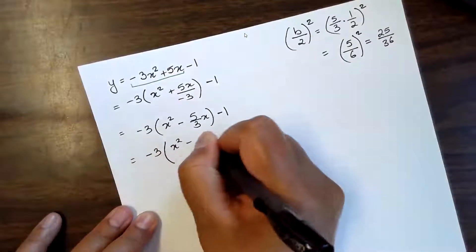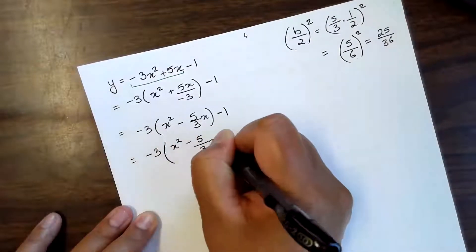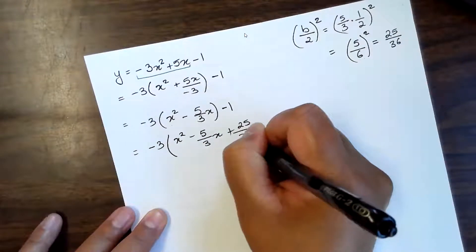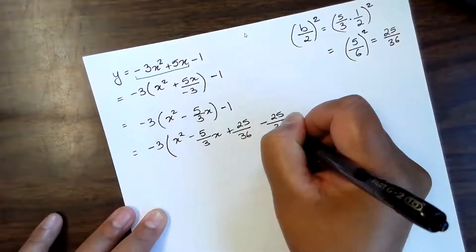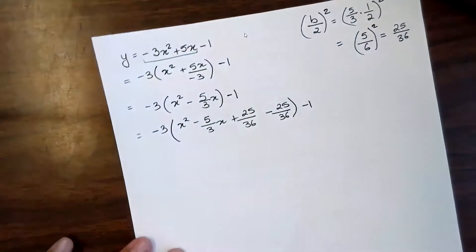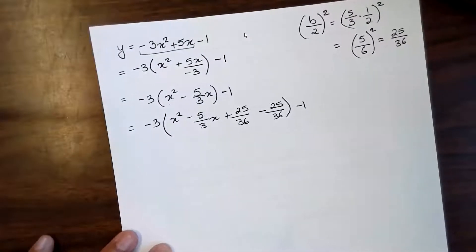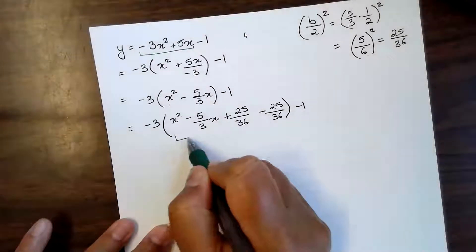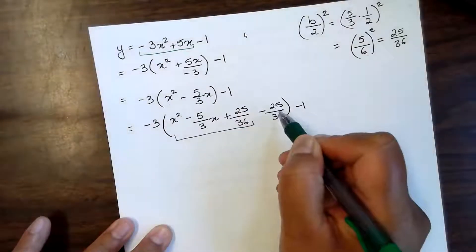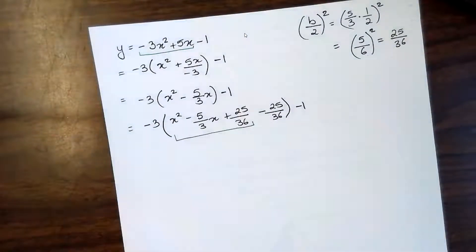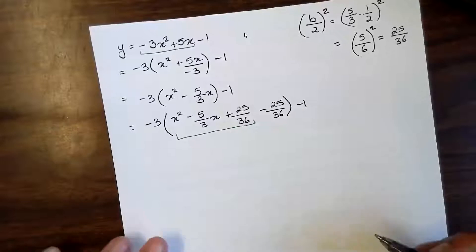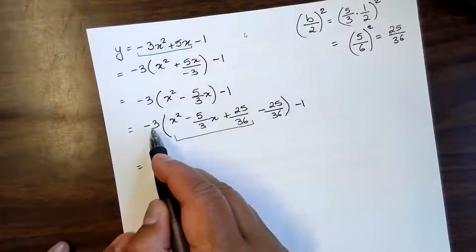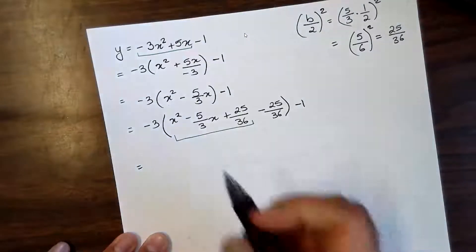To make sure we do not change the value of the function, when we add 25 over 36 we also subtract it at the same time. Now to complete the square we only need the first three terms inside the parentheses, which means we take the negative 25/36 and bring it outside by multiplying it with the negative 3 on the outside.